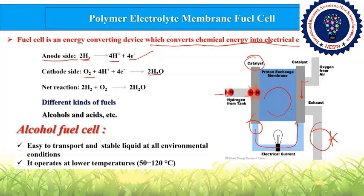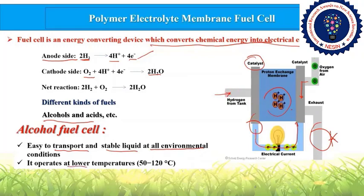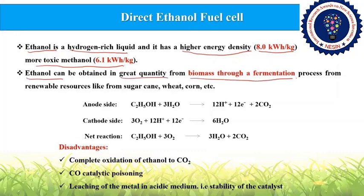Hydrogen production, storage, and transportation is very difficult, so people started thinking about alternative fuels — alcohols and acids. Among these, alcohols are promising because they are easy to transport, stable liquids at all environmental conditions, and operate at lower temperatures. Among alcohols, ethanol is considered a hydrogen-rich liquid with a high energy density of around 8 kWh/kg compared to toxic methanol. Ethanol can also be produced in great quantity from biomass through fermentation.